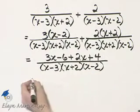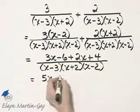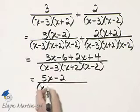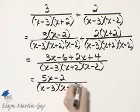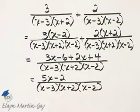And let's see what we have. We have 3x plus 2x, that's 5x. Negative 6 plus 4, that's minus 2, over that common denominator: x minus 3, x plus 2, times x minus 2. And I'll let you check, but there's no simplifying that can be done.